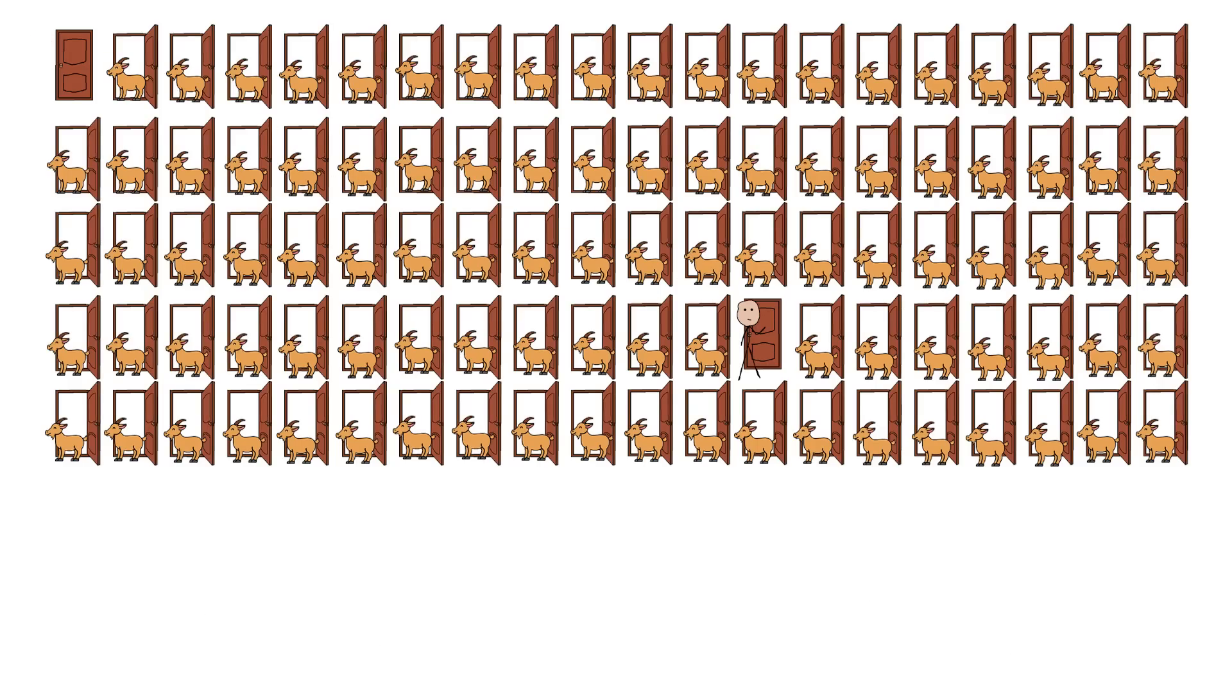Switching to door 73 now gives you a 99% chance of winning, because Monty's actions shows where the goats are, making door 73 very likely to have the console.